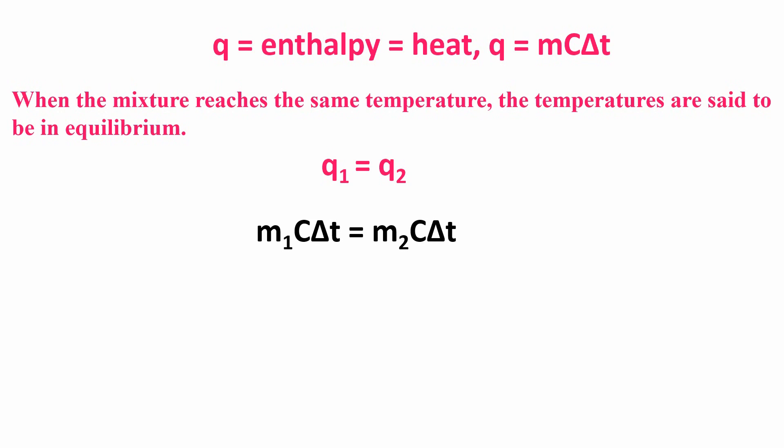Solving for Q, we get M1 C delta T equals M2 C delta T. Simplifying for delta T, we get M1 C times (T sub f minus T sub i) equals M2 C times (T sub f minus T sub i).